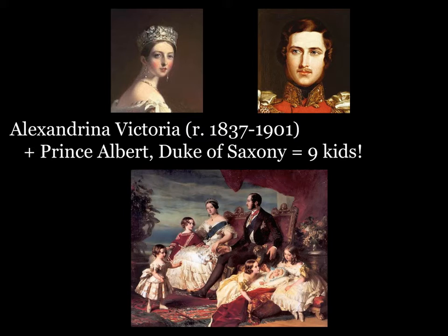In October of 1839, Victoria proposed to her cousin Albert, the Duke of Saxony, and in 1840, three years after her accession, they married. By all accounts, it was a happy marriage, as the two were very much in love. Over the next 17 years, they would become parents to nine children, all of whom survived into adulthood, and most of whom married into noble or royal families in Europe. While it was a happy marriage, the two were not equals. Parliament did make Albert a naturalized British citizen, but refused to give him a peerage, a British title.